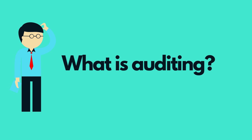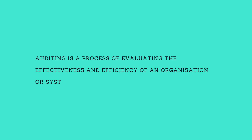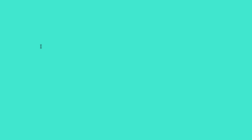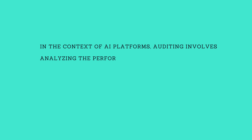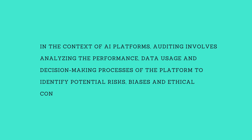What is auditing? Auditing is a process of evaluating the effectiveness and efficiency of an organization or system. In the context of AI platforms, auditing involves analyzing the performance, data usage, and decision-making processes of the platform to identify potential risks, biases, and ethical concerns.